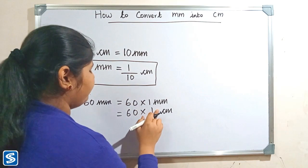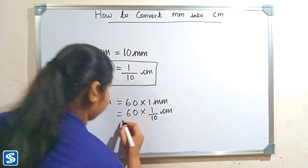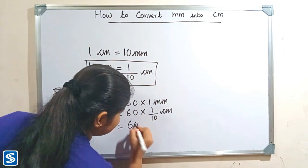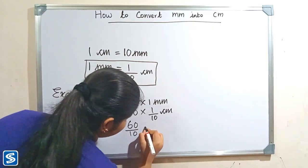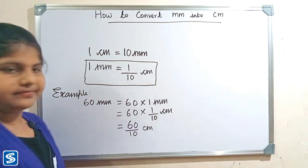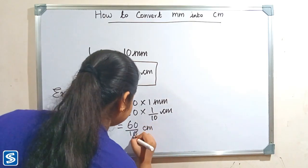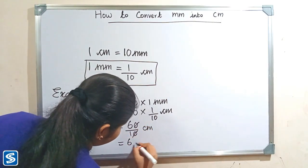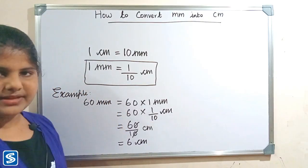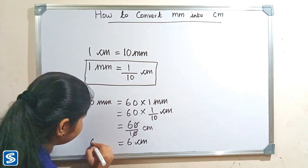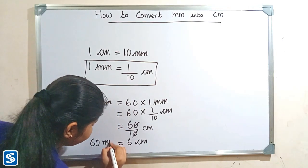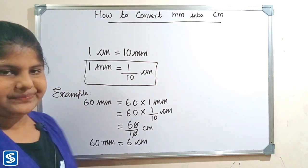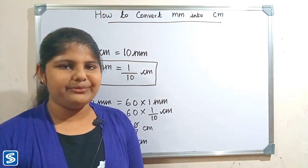So 60 multiply 1 will be 60, so 60 by 10 centimeter. Here 0 and 0 gets cancelled, so our answer will be 6 centimeter. So 60 millimeter is equal to 6 centimeter. Next we will take one more example.